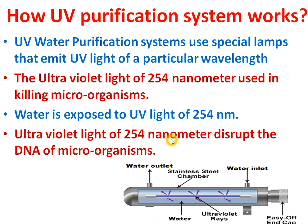In a UV water purification system, special lamps emit UV light of a particular wavelength — specifically 254 nanometers. This 254 nanometer wavelength is very important because if the UV lamp emits more than or less than 254 nanometers, it will not be as effective. Only 254 nanometer ultraviolet light can effectively destroy the DNA of microorganisms.